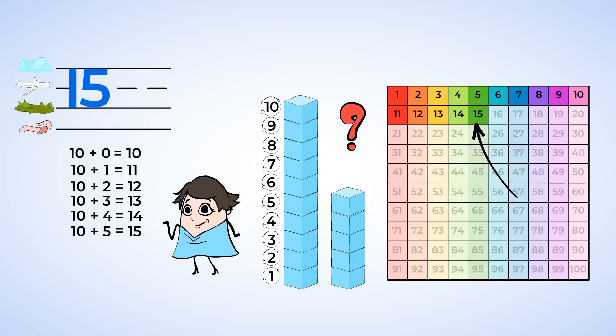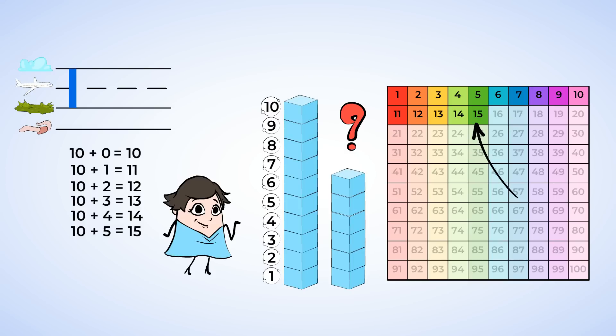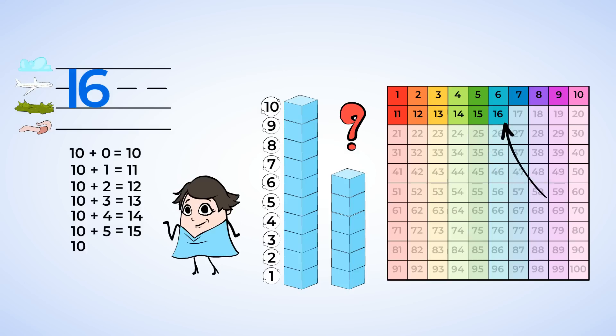And what if Mia kept adding more blocks? Let's find out. Now we have 1 tower of 10 and a tower of 6. Let's write a 1 to show the tower of 10 and a 6 right next to it. To make a 6, we can go around and curl it up. And this is the number 16. 10 and 6 is 16.